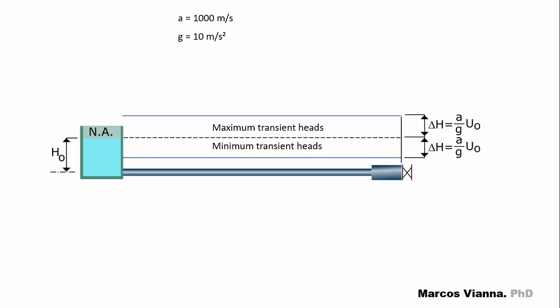Assuming that its celerity is something like 1000 meters per second, the gravity is 10 meters per second squared, and the water velocity is 1 meter per second, the head variation will be 100 meters. Not negligible, isn't it? Pay attention! 100 meters increase and 100 meters decrease!